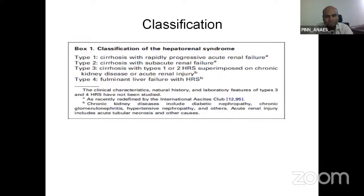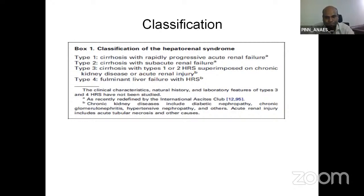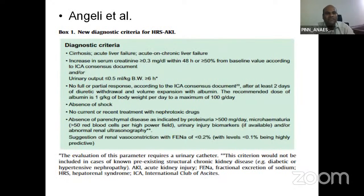The minor criteria include urine output less than 500 ml/day, urinary sodium less than 10 milliequivalents/liter, urinary osmolarity greater than plasma osmolarity, urinary blood cells less than 50 per high power field, and serum sodium less than 130 milliequivalents/liter. Based on time course and precipitating factors, HRS was divided into 4 types: Type 1 — cirrhosis with rapidly progressive renal failure; Type 2 — cirrhosis with subacute renal failure; Type 3 — cirrhosis with Type 1 or 2 HRS superimposed on chronic kidney disease or acute kidney injury.